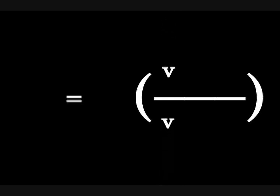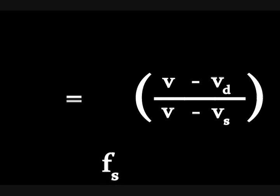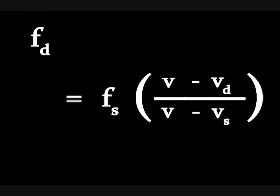The frequency perceived by a detector is equal to the velocity of the detector relative to the velocity of the wave, divided by the velocity of the source relative to the velocity of the wave, multiplied by the wave's frequency. In the Doppler effect equation, v is the velocity of the sound wave, v sub d is the velocity of the detector, v sub s is the velocity of the sound source, f sub s is the frequency of the wave emitted by the source, and f sub d is the frequency received by the detector. This equation applies when the source is moving, when the observer is moving, and when both are moving.